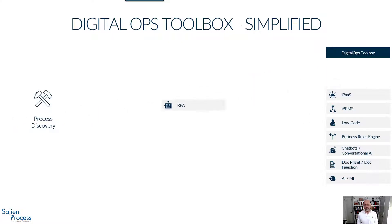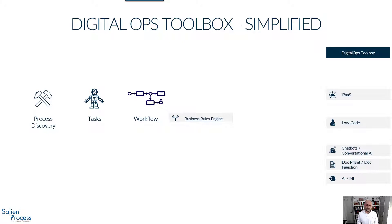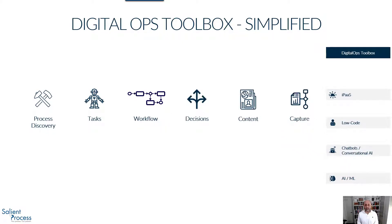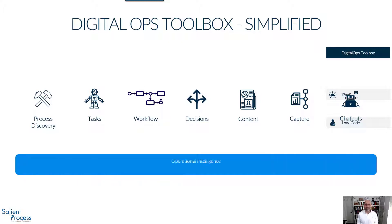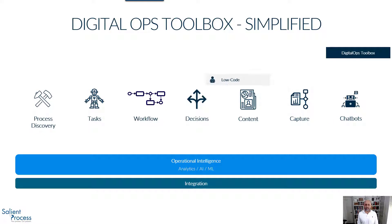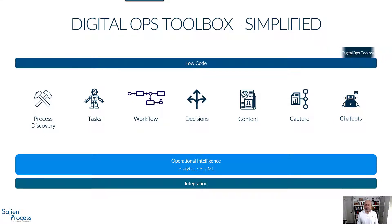We would have process discovery for mining and modeling, tasks for RPA, workflow for process execution, decisions for your business rules engine, content and capture to handle document management and ingestion, and chatbots for automated chatting. Then across all of these, we might have operational intelligence, which encompasses analytics and AI, and integration for connecting to other systems. As for low code, we could describe that as something each capability should offer, but it can span all of these areas just like operational intelligence and integration.